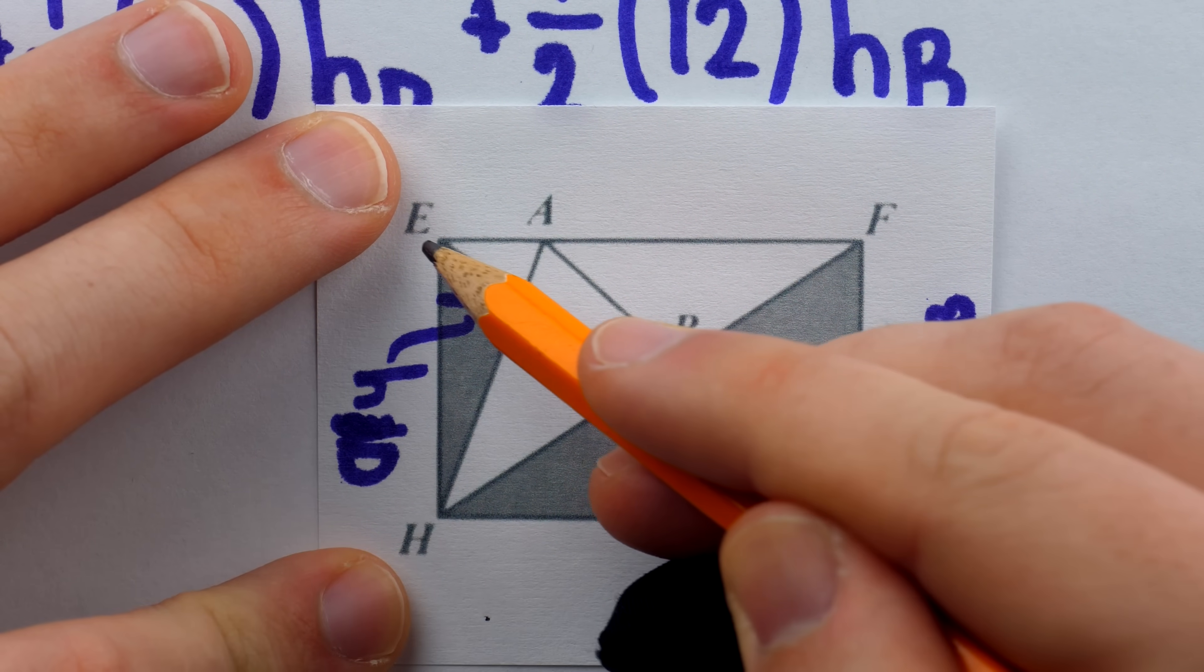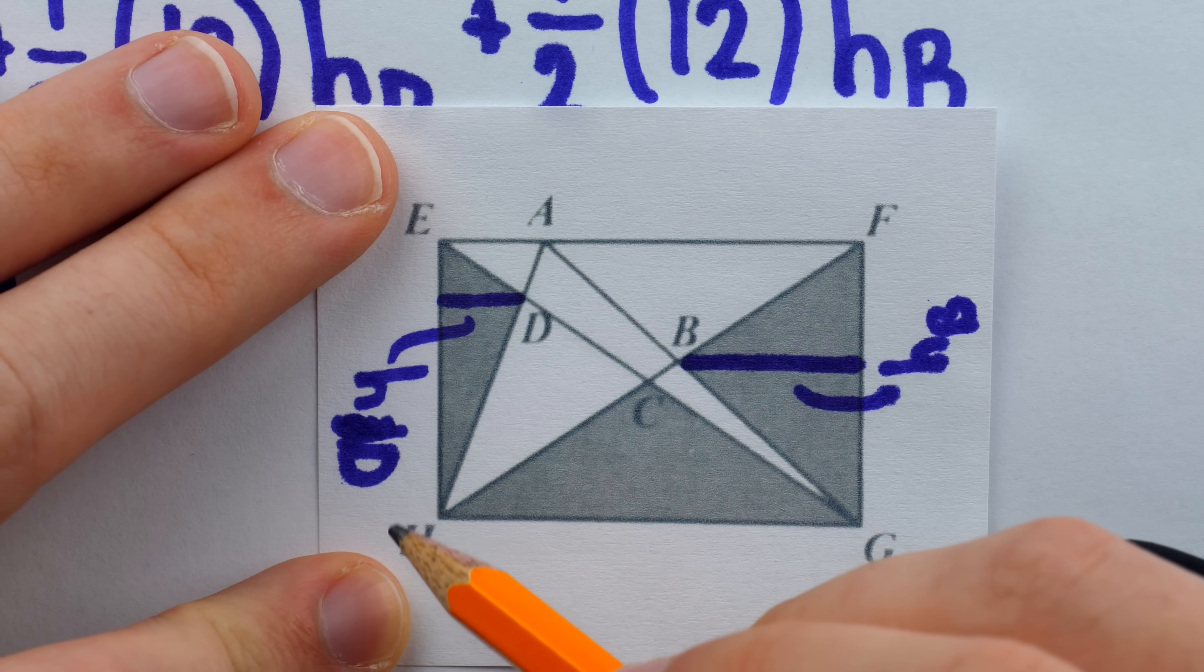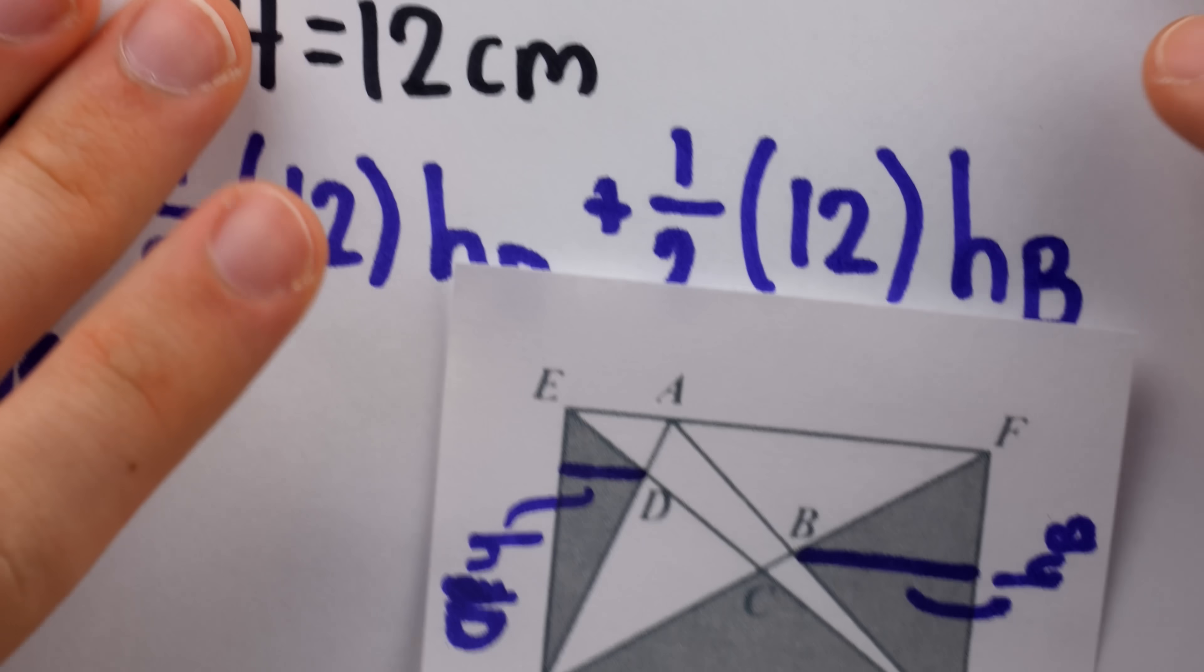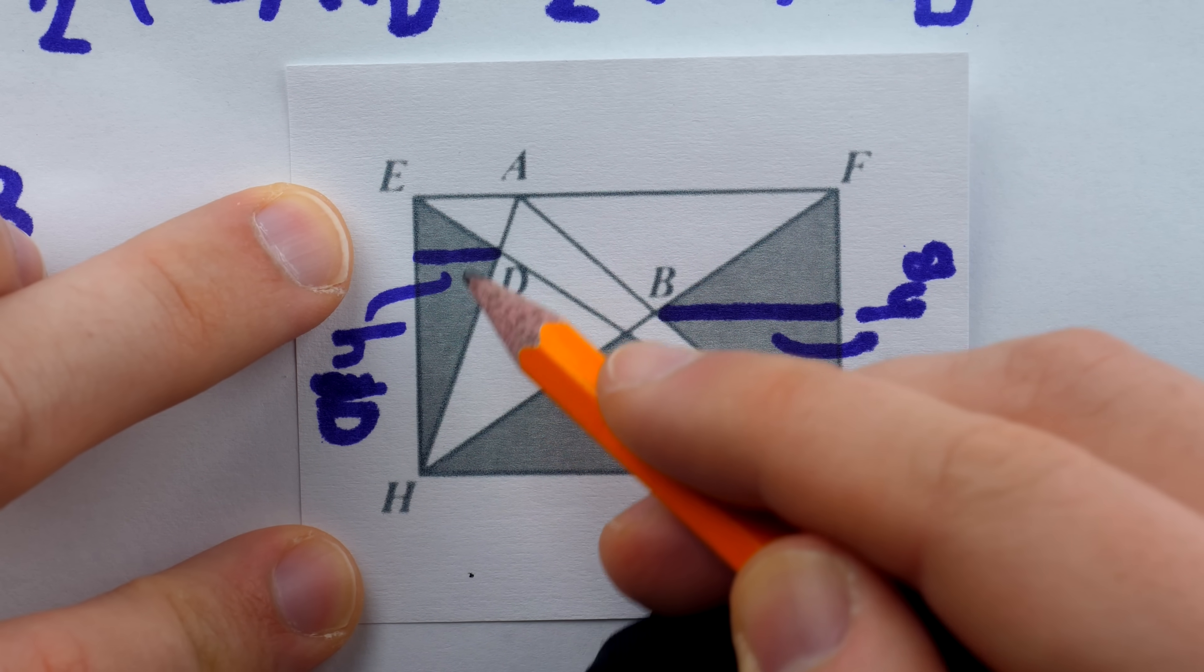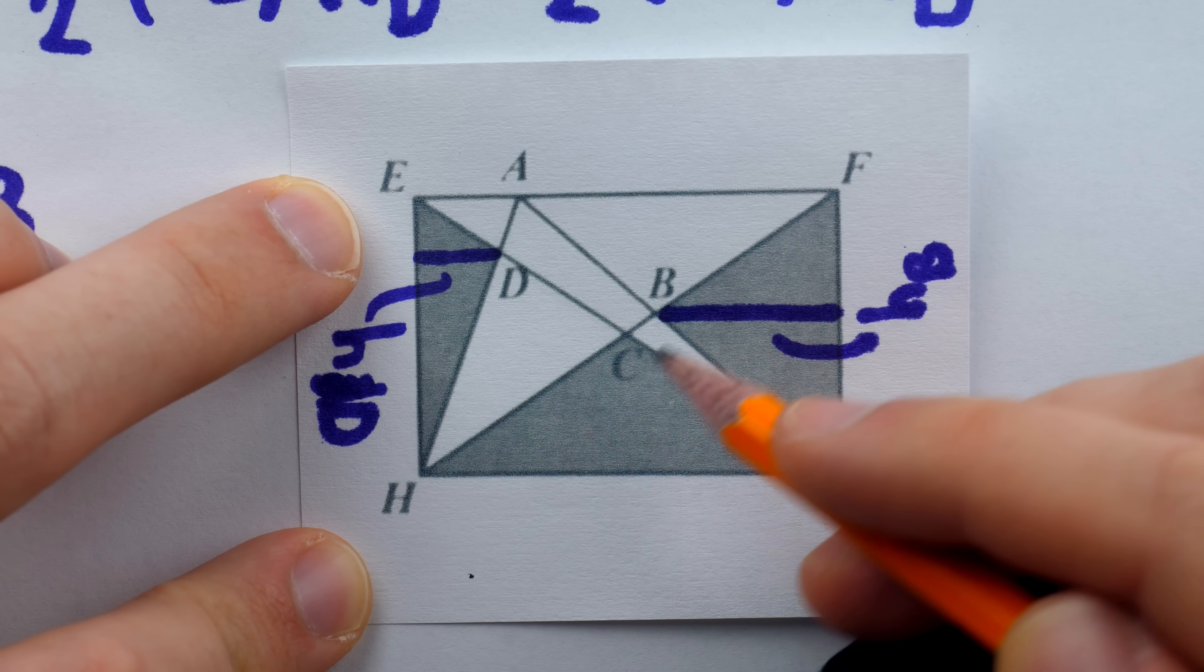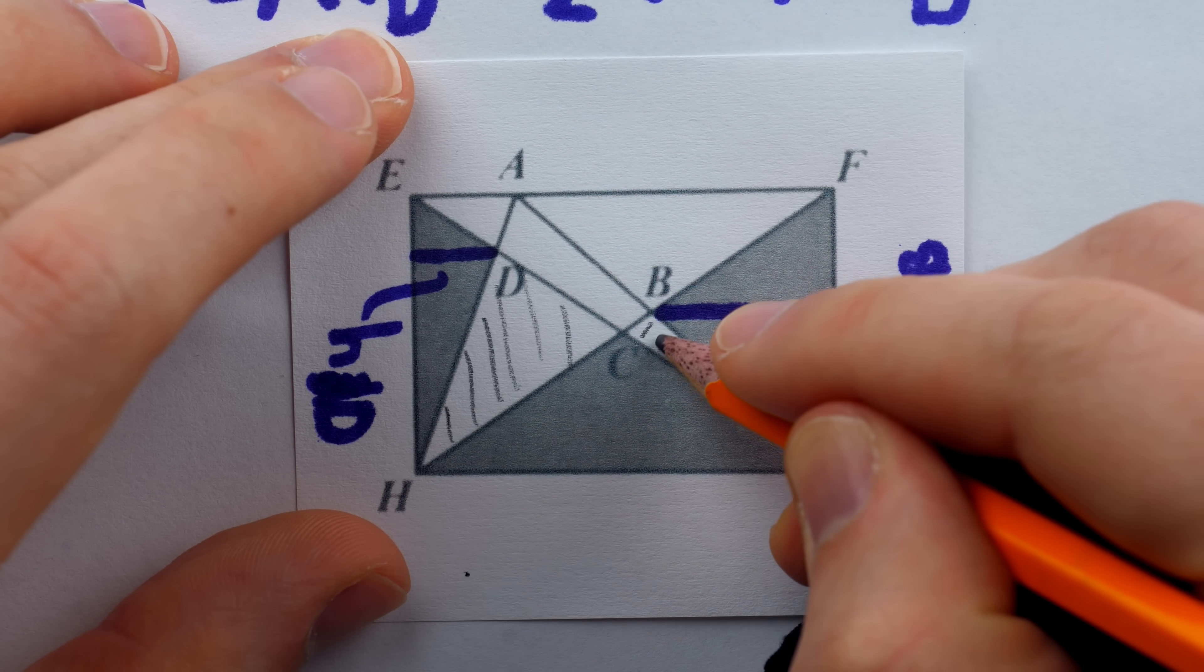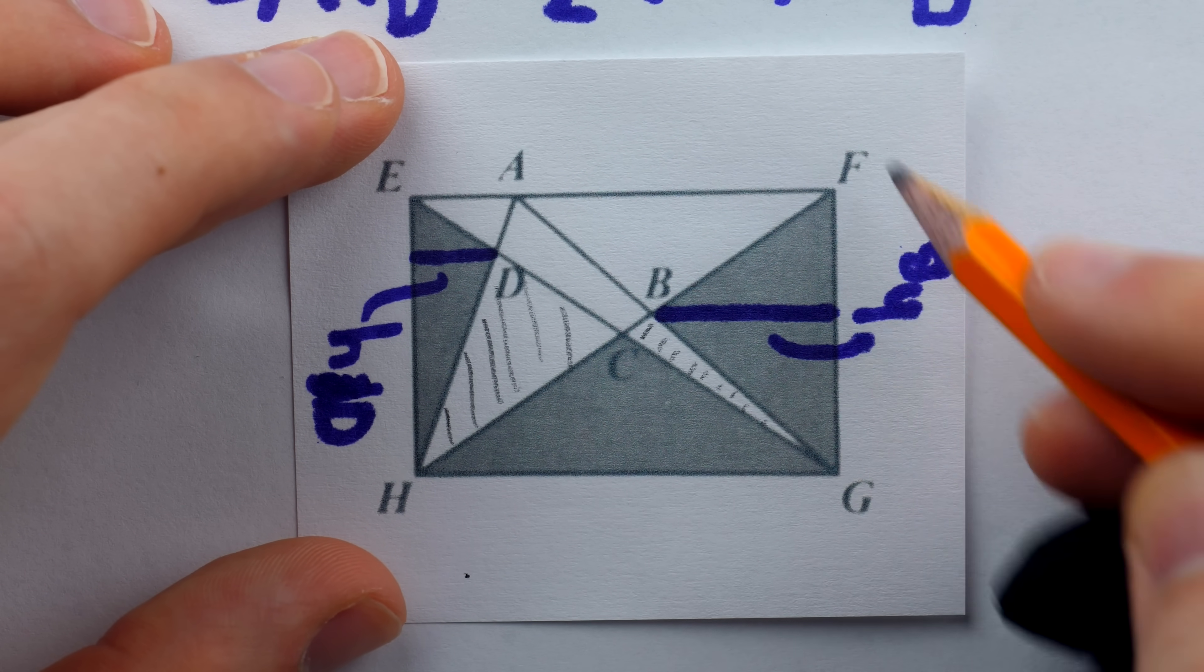See, this triangle on the left consists of that shaded area, which we already discussed is 6h_D, plus this non-shaded area, which would have to be 54 minus 6h_D. 54 because this triangle is one of the four triangles that the diagonals cut the rectangle into, and the diagonals of a rectangle are known to cut it into four equal area triangles. The total area of the rectangle is 18 times 12, and a fourth of that is 54. So this triangle has 54 square units of area, consisting of this shaded 6h_D area, plus this unshaded area.